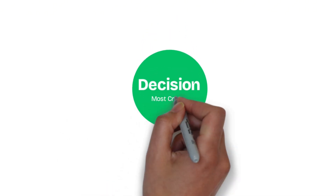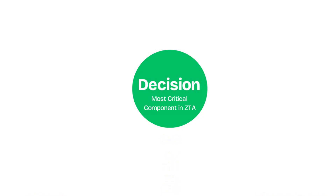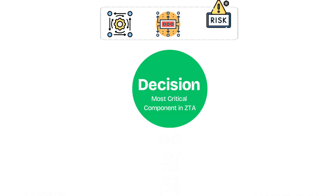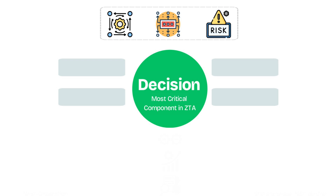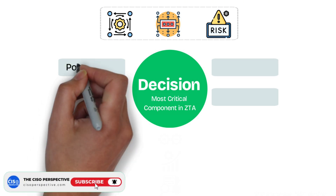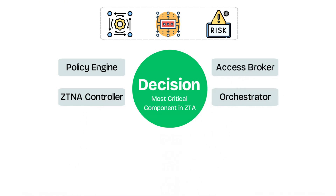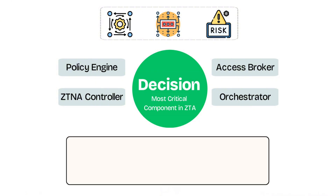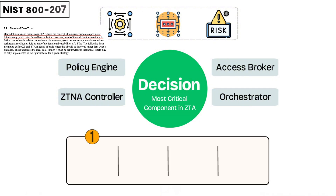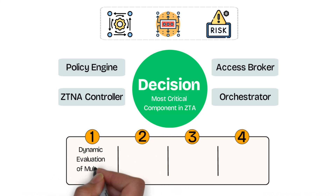The policy decision point is arguably the most critical component in the entire zero trust architecture. It's the brains of the system — the place where access decisions are made based on dynamic policy, contextual signals, and real-time risk. And just like the enforcement point, the decision point isn't just a single product or device. It's a logical function, and the name and structure will vary depending on the vendor. Some platforms may call this a policy engine, while others may call it a ZTNA controller or access broker. While the terminology changes, the role remains the same. This is the part of the architecture responsible for ultimately making the decision, and it must satisfy the core tenets reviewed in part one: dynamic evaluation of identity, authentication, device posture, location, and risk signals.